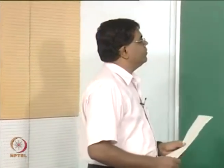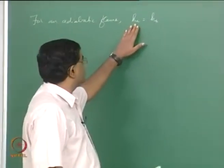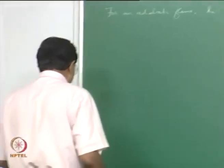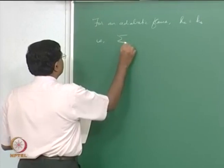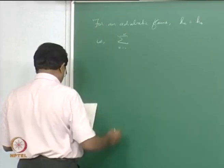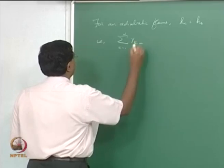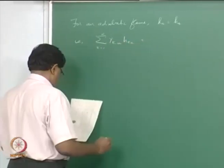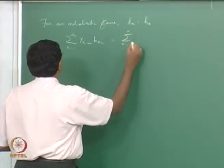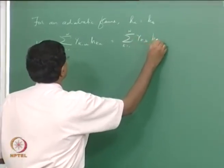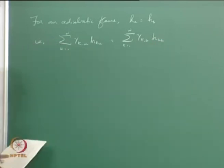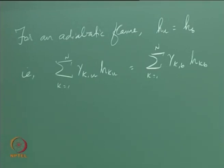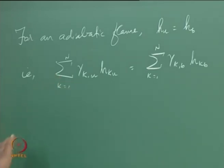For an adiabatic flame, the unburnt enthalpy should be equal to the burnt enthalpy, which means sigma k=1 to n of y_{k,u} times h_{ku} equals sigma k=1 to n of y_{kb} h_{kb}, where h_{kb} is the enthalpy of the burnt products. What we then do is express enthalpy as formation enthalpy plus sensible enthalpy.